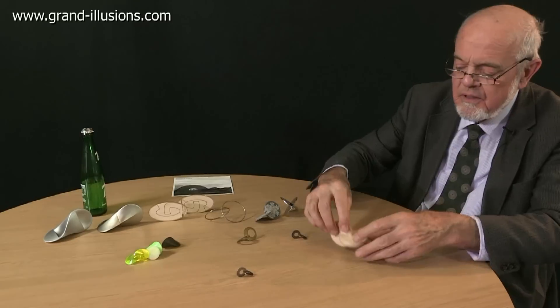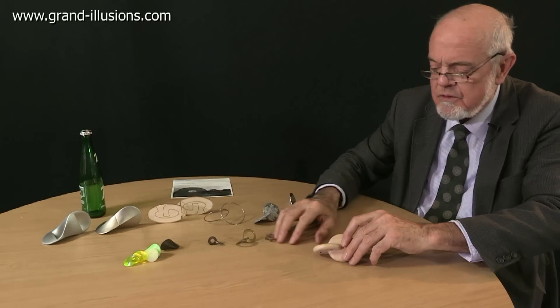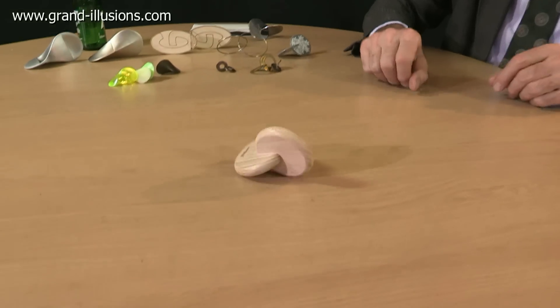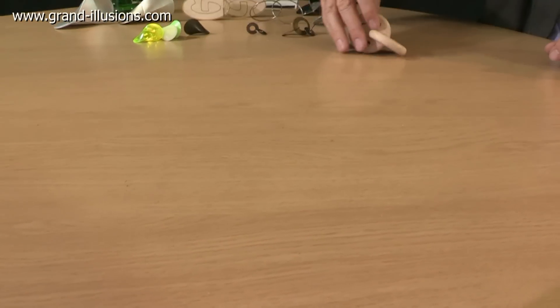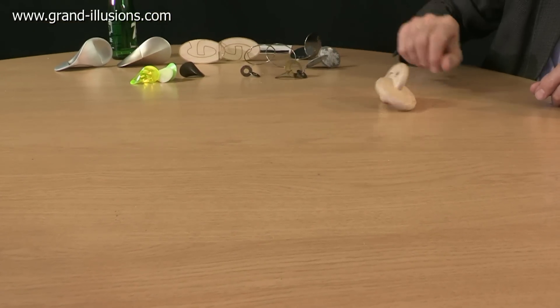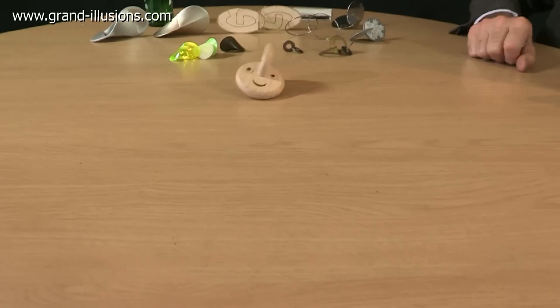I discovered some time ago that even the toy market for small children includes the wobbler. This one is made by a Finnish company, made out of birch wood I think it is, which is a lovely light wood that they make a lot of these things out of in Finland. What's nice about it, of course, is it's got smiley little faces, which would appeal to very small children.